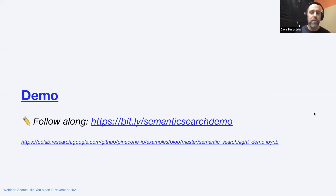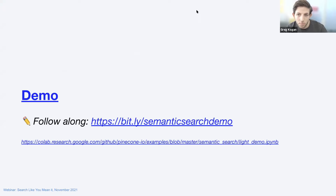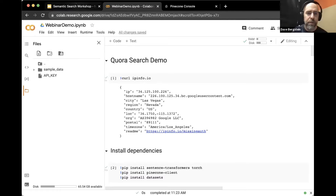Let's jump into the demo. You can follow along — sign up for a free Pinecone account, create your index, and use the API key you get with the account. Here I am in a Colab notebook and we'll go through this Quora search demo. I'll first check where I'm running — it's GCP in Nevada — and then install the dependencies: Sentence Transformers, the Pinecone Python client, and the Quora data from datasets.